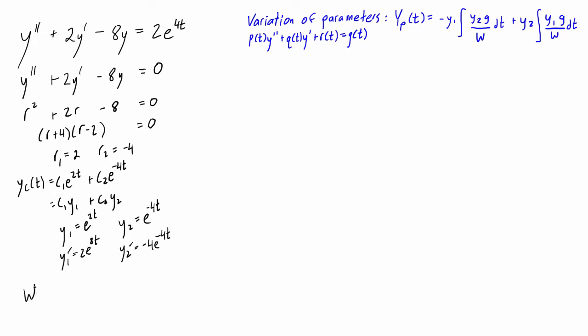The Wronskian of Y1 and Y2, we write like this, Y1, Y2, is equal to the determinant when we put these in matrix form actually in this order. So it is, and when we calculate it, we have the top left element times the bottom right element minus the top right element times the bottom left element. And that all simplifies to negative 6e to the negative 2t.